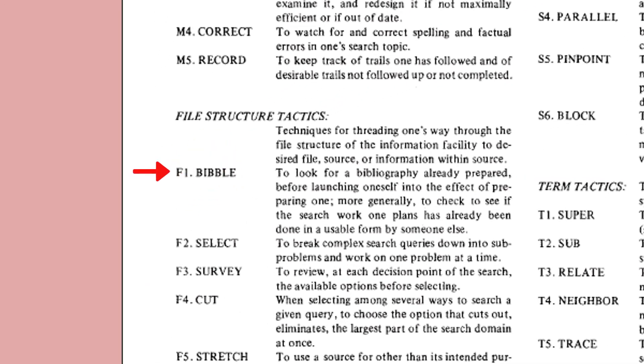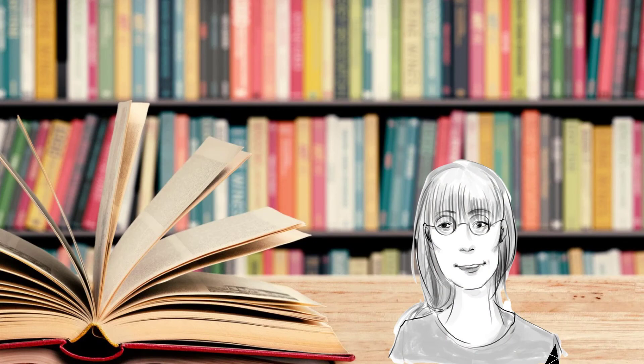To Bibble is an entirely different way to search. It means to look for a bibliography that is already prepared, rather than conducting your own search from scratch. My dove Bibble is named in honor of these ideas, and to celebrate information science.